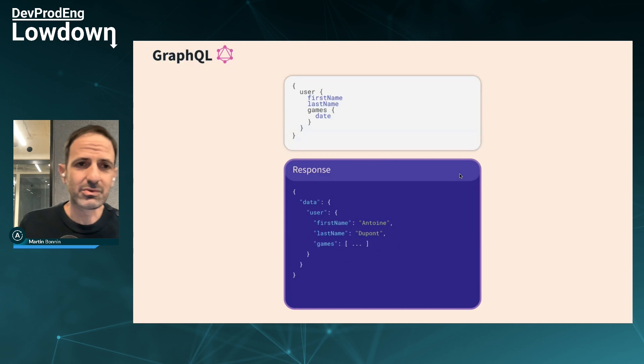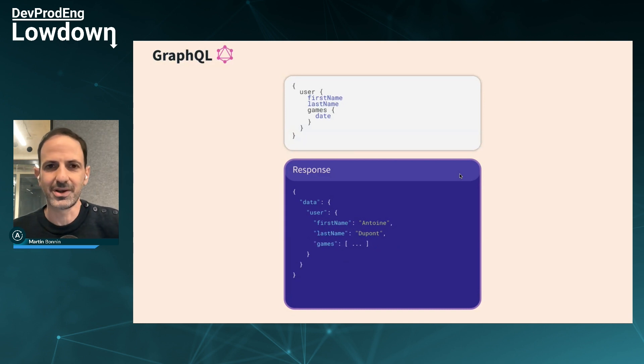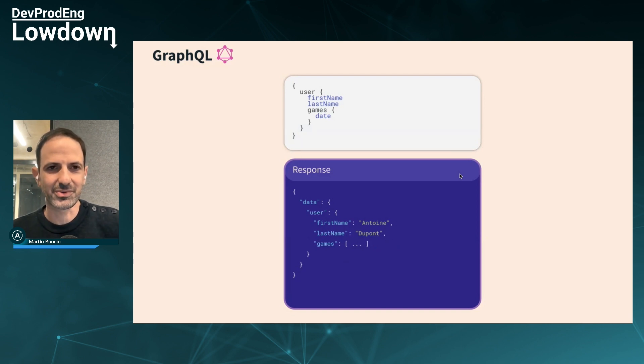It's a lot more efficient on the network because you don't transmit useless data — we call this no overfetching in GraphQL. Another cool thing about GraphQL is that it's 100% type safe, which we love when doing Kotlin — it has support for nullability and so on. GraphQL is also 100% open source, started from Facebook in 2015 to solve the problem of having too many API endpoints.